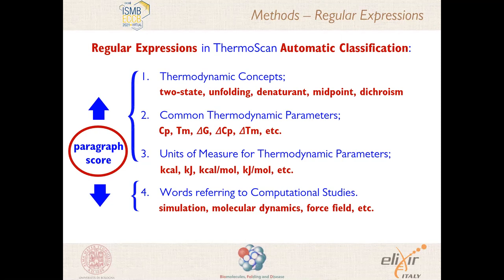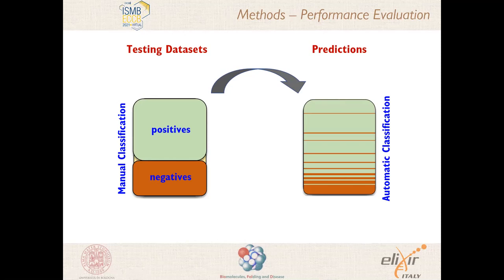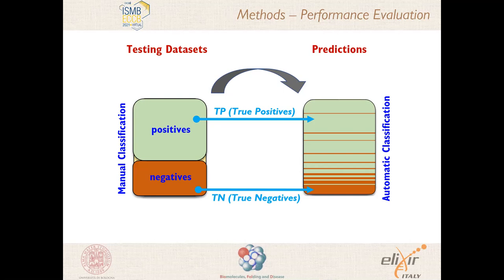Coming back to the comparison between the manual and automatic classification, we evaluated the performance of ThermoScan as usual for a binary classification by calculating the confusion matrix. We have the true positives and true negatives — the true positives being those articles containing quantitative thermodynamic data on protein folding — and then we have the false positives and the false negatives. The performance values varied as a function of where the threshold is set.